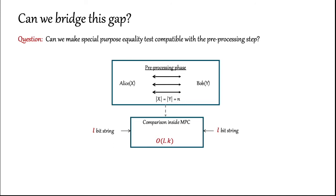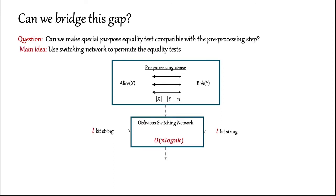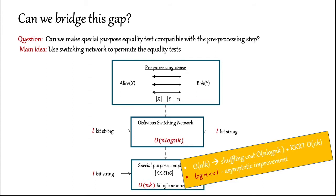Since the special purpose equality tests are very efficient, we are interested in making them compatible with the preprocessing step. Our main idea is that we use an oblivious switching network to permute the order of the equality tests. Such a primitive needs order N log N OTs over a switching network, making the communication cost order N log N times kappa. So asymptotically, we replace the comparisons in the secure computation with order N log N times kappa for shuffling and order N times kappa for the comparisons. In almost all cases, log N is much smaller than the length of the strings, giving us our improvement.